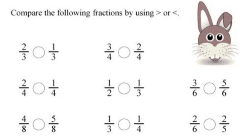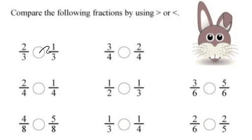Now to compare fractions, either the denominators should be same or the numerators should be same. If the denominators are same, as we can see in the first question — 2 by 3 and 1 by 3 — the denominators are same. If the denominators are same, the fraction with the greater numerator has the greater value. So 2 by 3 is greater here and 1 by 3 is lesser.